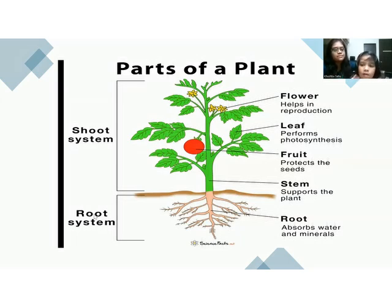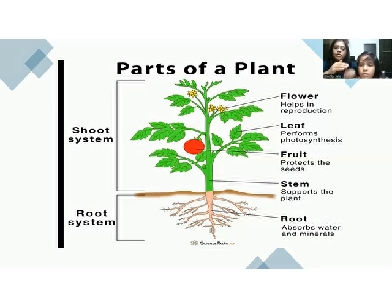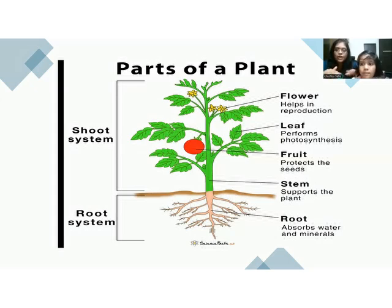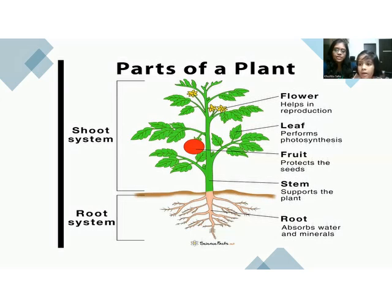Do you know what is the root system? The root system is the parts that are under the plant, under the soil. Root is that part of the plant which is present below the soil. And what is the shoot system?